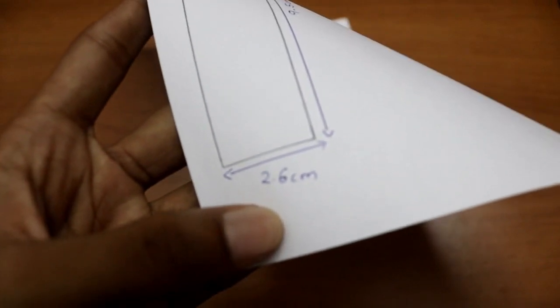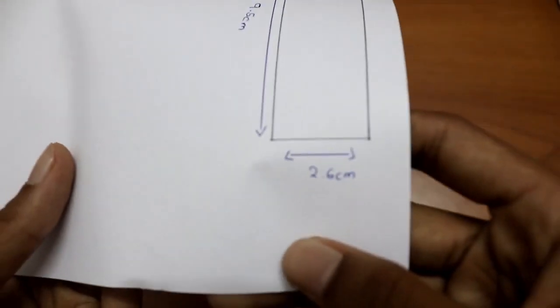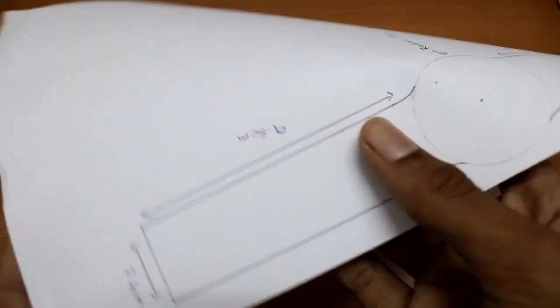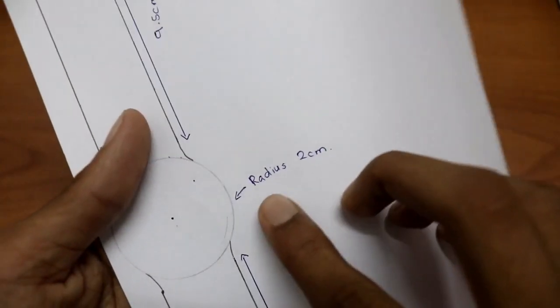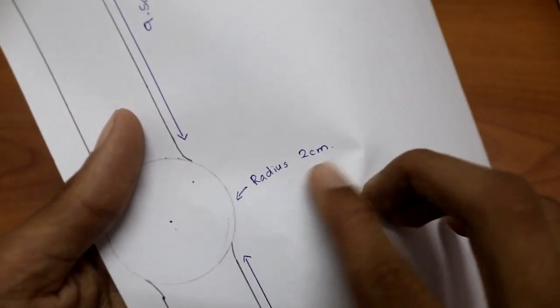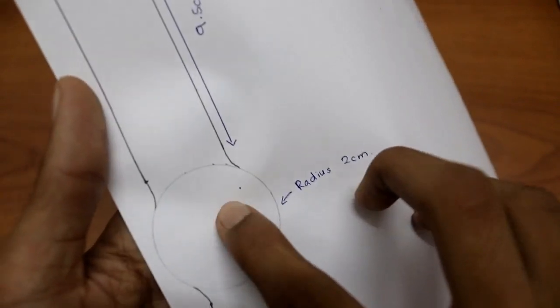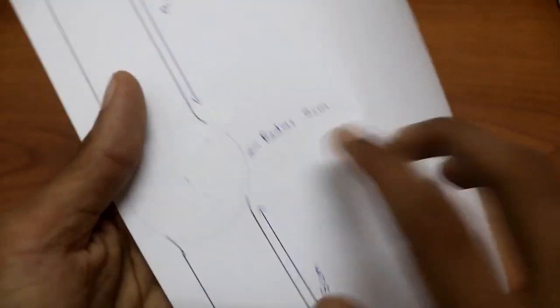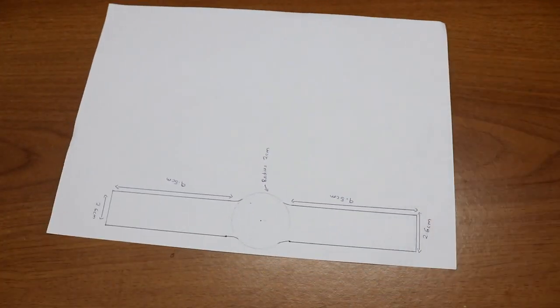Draw this on the A4 sheet and cut them off. The radius will be 2 centimeter exactly, so use a compass to draw a 2 centimeter circle. Now let's cut this.